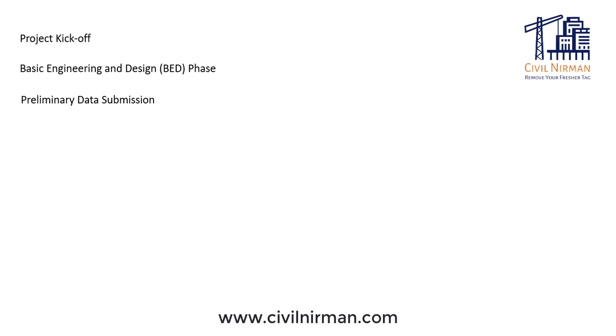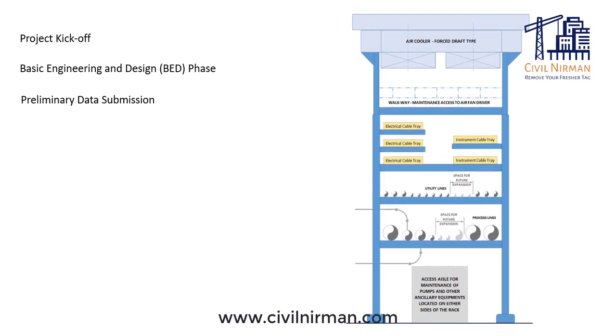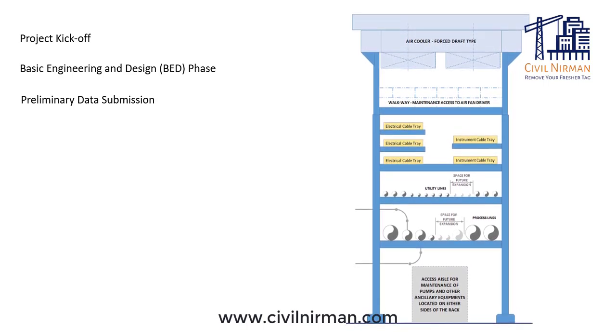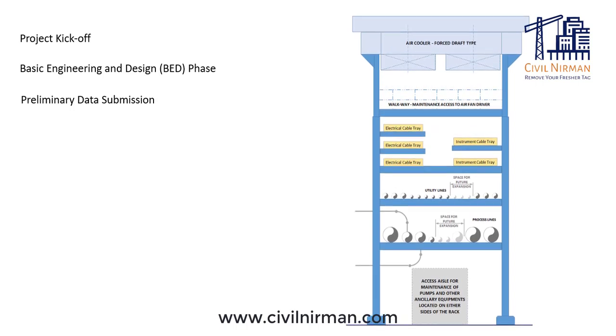The next important phase is preliminary data submission. The piping team submits the estimated loads and preliminary layout data to the civil and structural teams. This data includes estimated pipe weights, insulation contents, and any thermal expansion or contraction allowances. The civil and structural teams use this data to create primary designs for the foundation and structural members of the pipe rack.